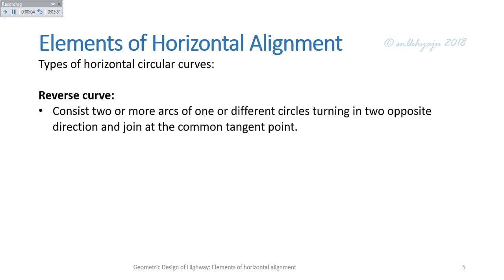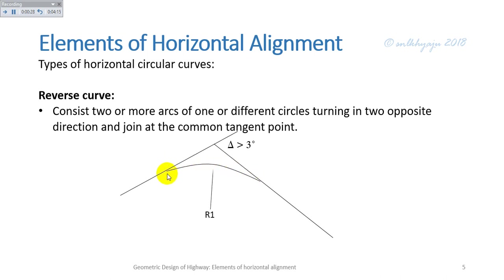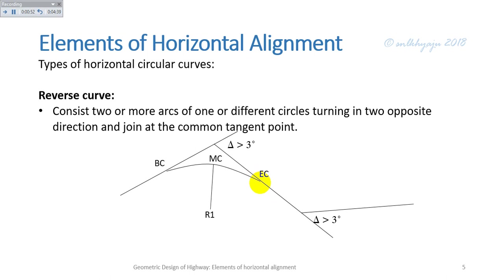Second is the reverse curve, which consists of two or more arcs of one or different circles turning in opposite directions and joined at a common tangent point. There are tangent 1 and tangent 2 with different deflection angles greater than 3 degrees. To be a reverse curve, the end of curve of the preceding curve must coincide at the same point as the beginning of curve of the following curve, and the radius of the two succeeding curves should be in opposite directions.